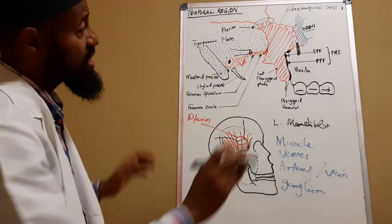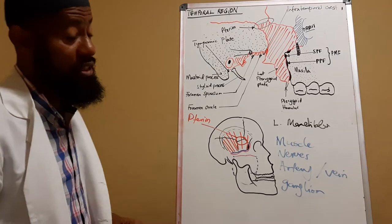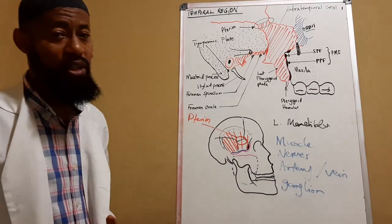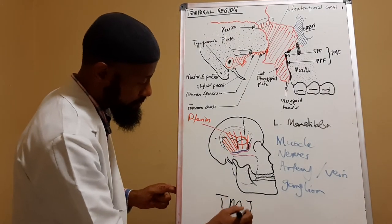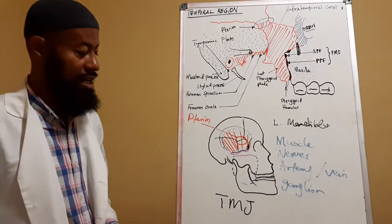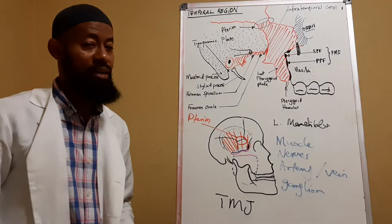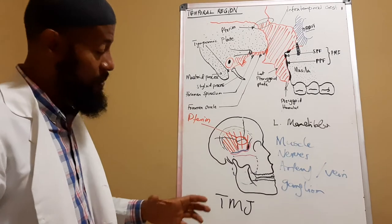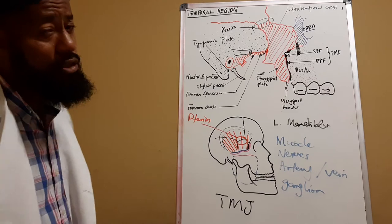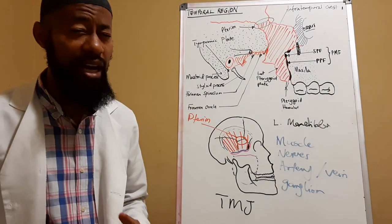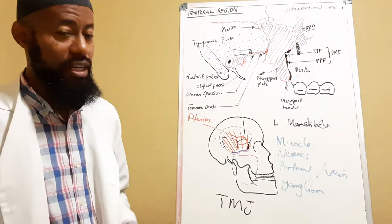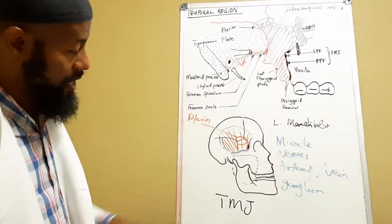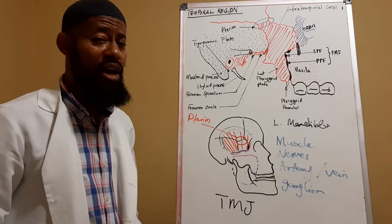The infratemporal region, the parotid region, and the temporal region all contribute to a common understanding of the temporomandibular joint and its movement. The TMJ is a modified joint in this region, and the muscles of mastication are responsible for its movement. The parotid gland, being highly mobile within this region, is also clinically relevant. The clinical anatomy of the TMJ will be discussed in detail later in this lecture.